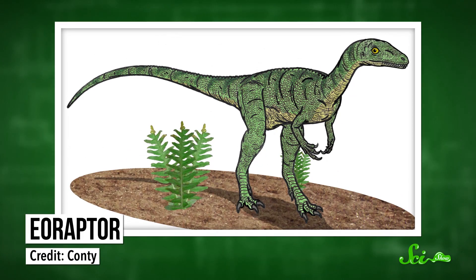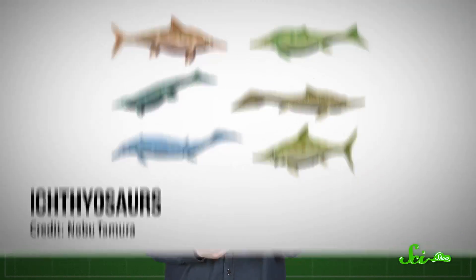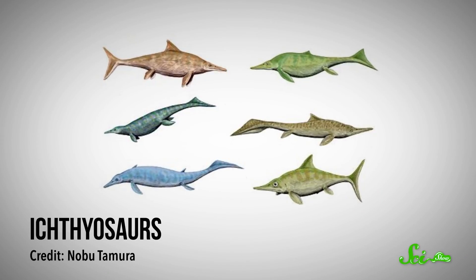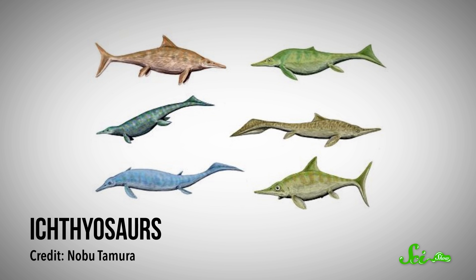But somewhere between Nyasasaurus and later dinosaurs like Eoraptor, they had officially evolved, ready to take over the world. A couple of other animal groups also turned up during the Triassic. One was the ichthyosaurs, the first reptile group to become fully aquatic again after evolving a land-based lifestyle. They're also one of only two groups to evolve a fish-shaped body from a four-footed animal body — the other group being the whales.